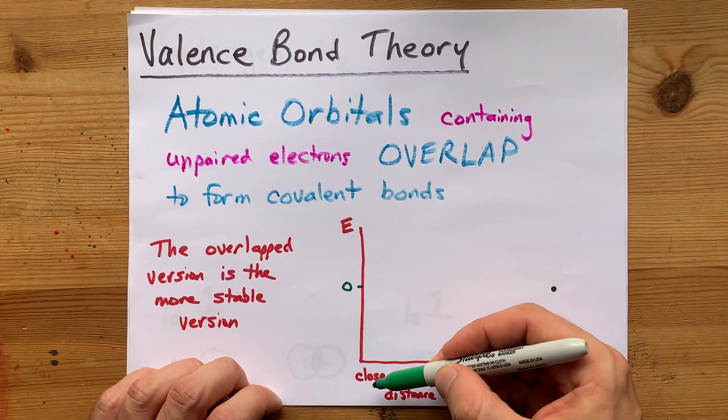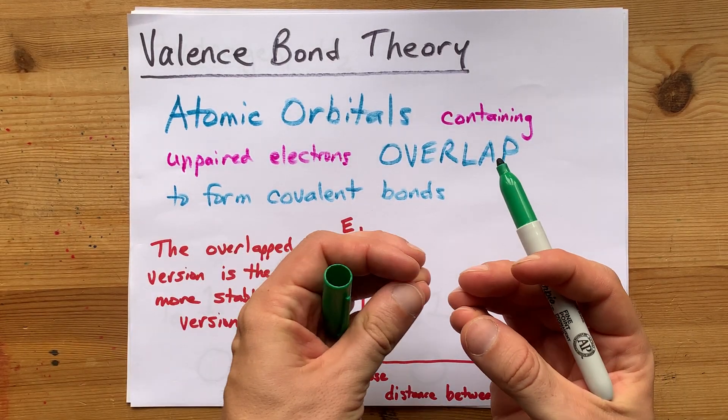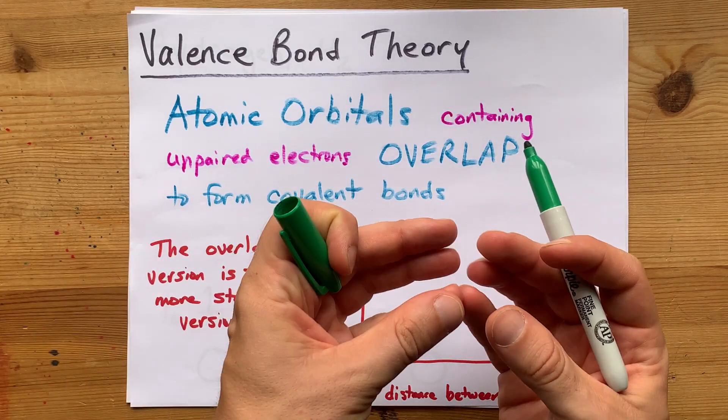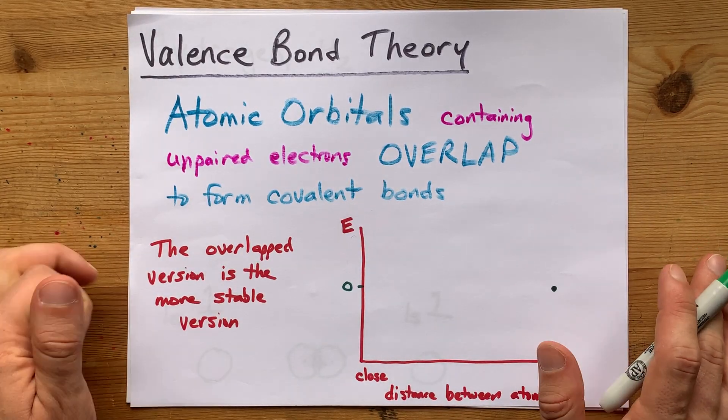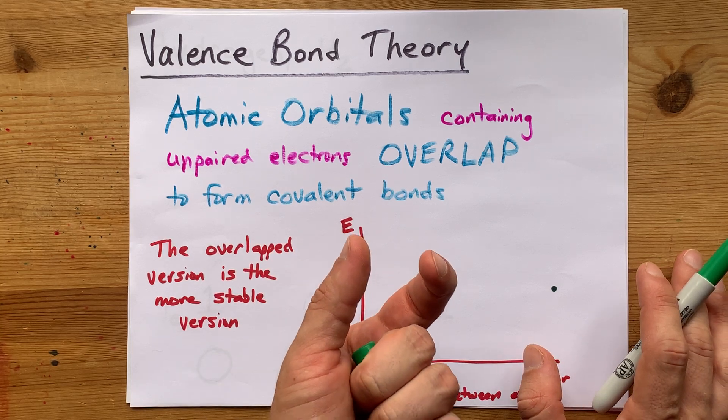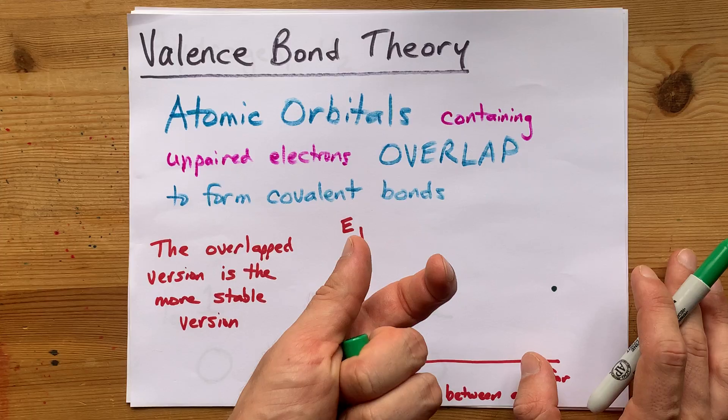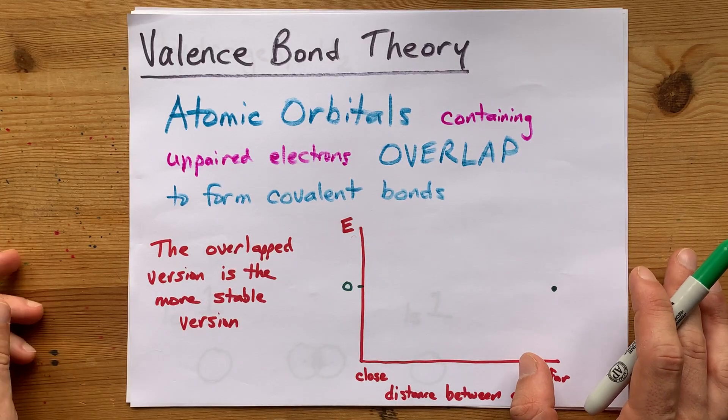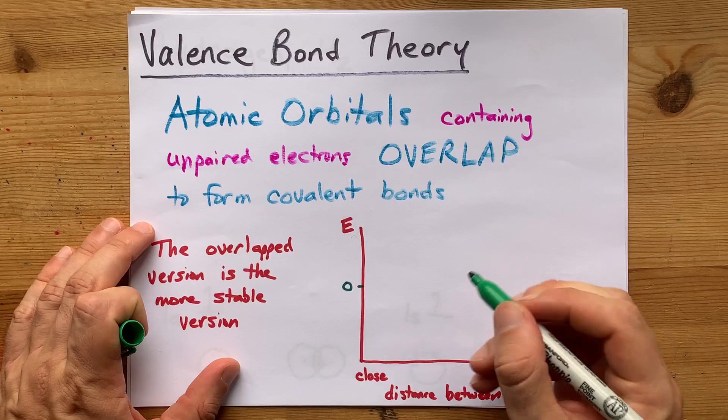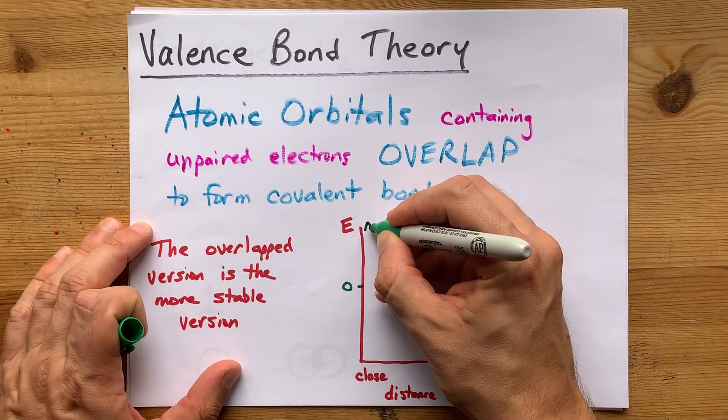If the two hydrogen atoms come very close together, if they super overlap almost entirely in space, the two nuclei, which again, the nuclei is where the protons and positive charge are, are going to be too close together. Positive charges repel, and that actually costs a lot of energy. So the energy diagram goes to infinity there.